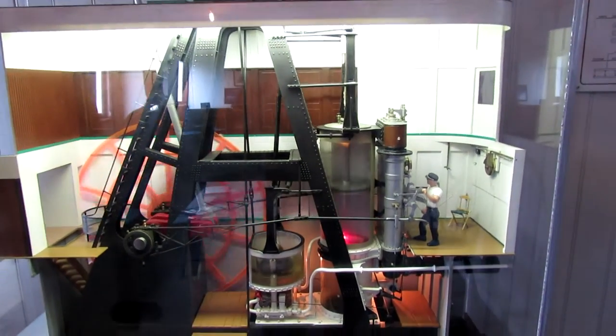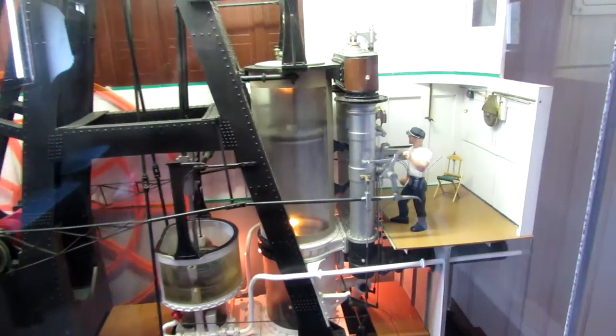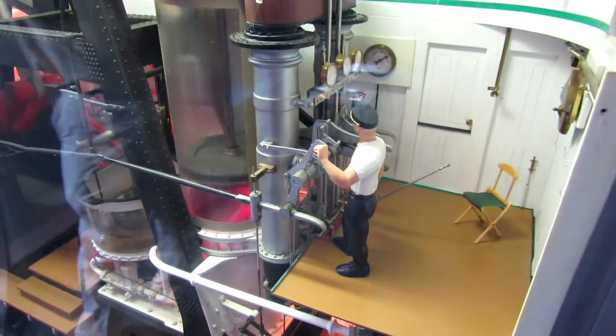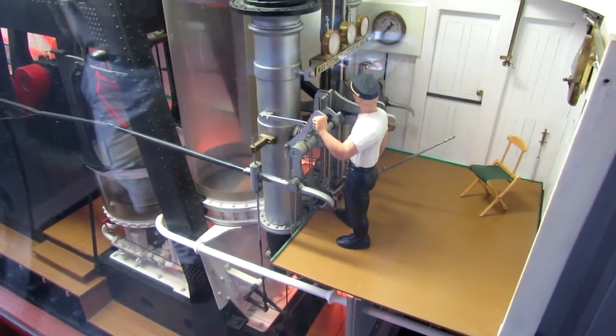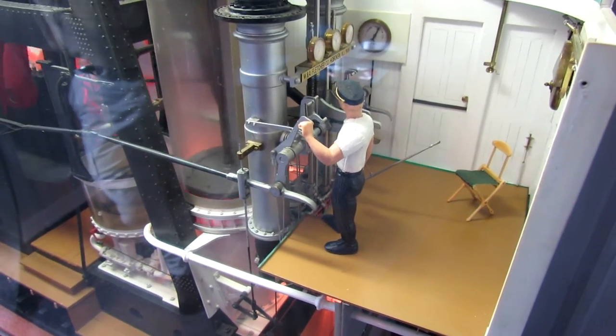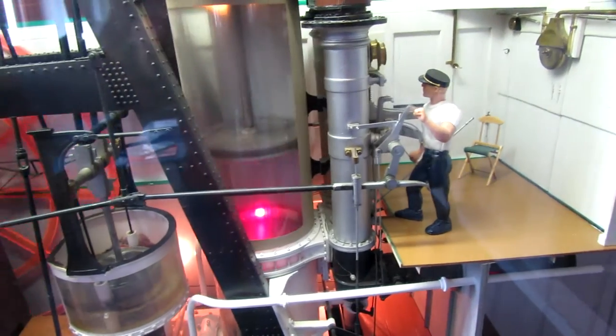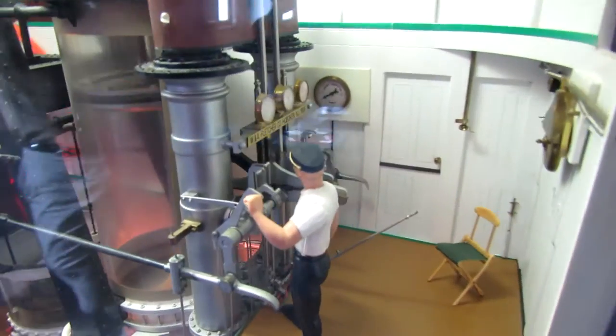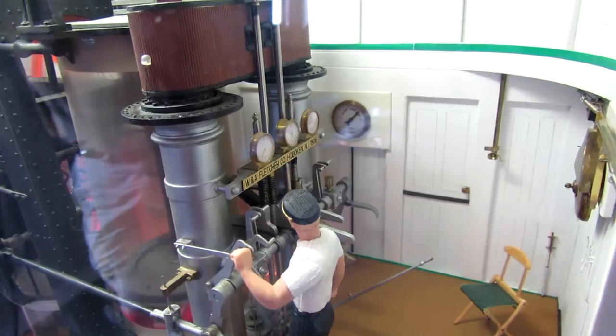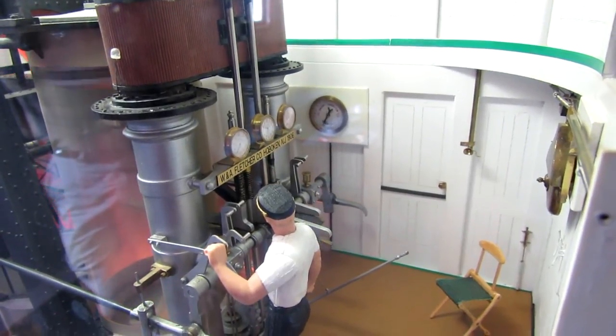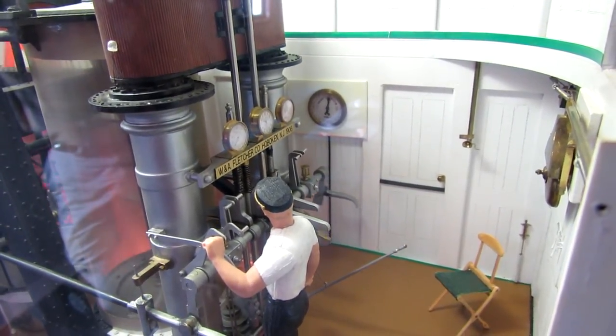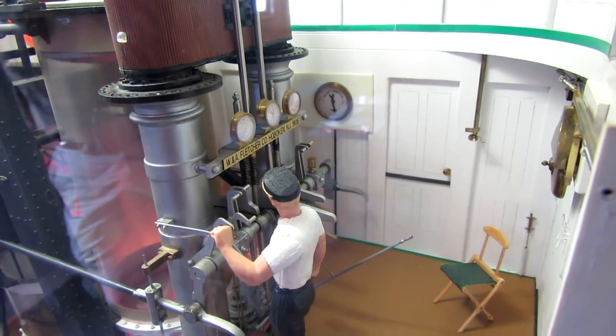It was the engineer's job to coax this massive engine to life. To start the engine turning, he used the starting bar to manually operate the valve. On the engine control room wall is a crank position indicator. Watching the indicator, the engineer would work the starting bar up and down, opening and closing the steam and exhaust valves to make the engine begin its rotation.